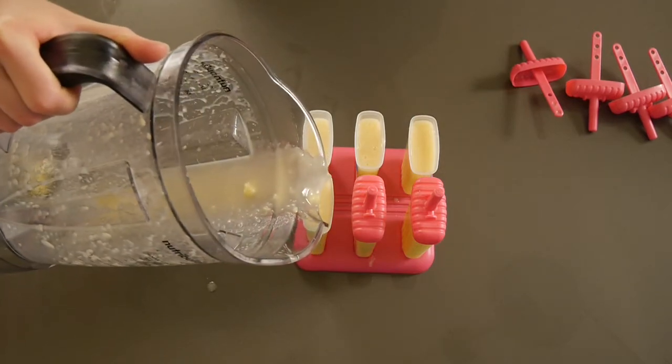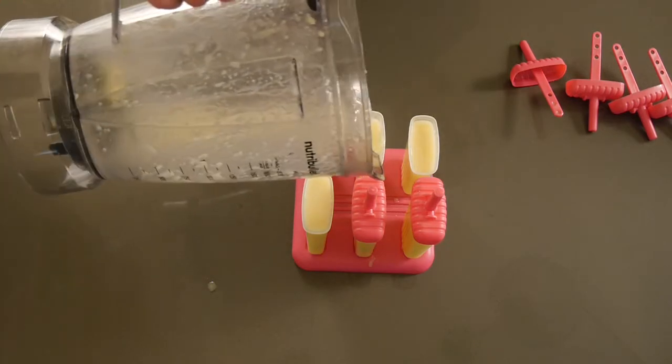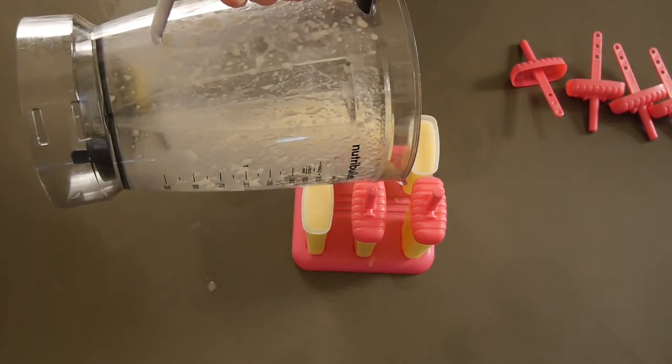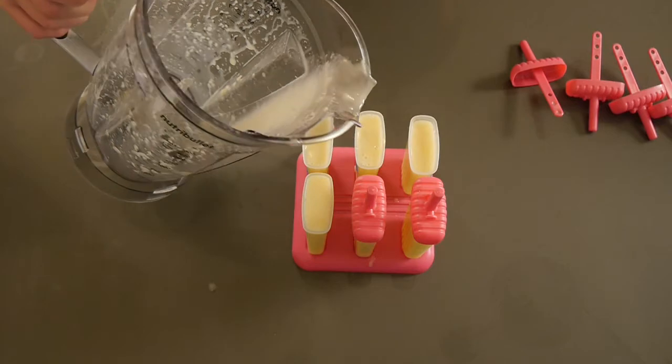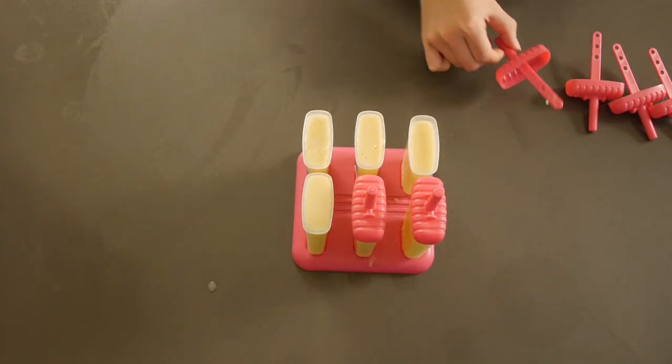You're gonna see me here in a second put some blue tape on these popsicles. That's because they look the same so how am I supposed to tell which ones have rum and which ones don't.